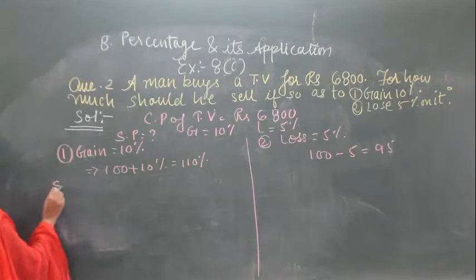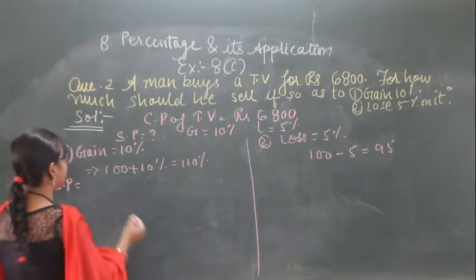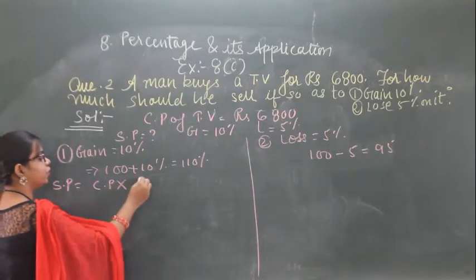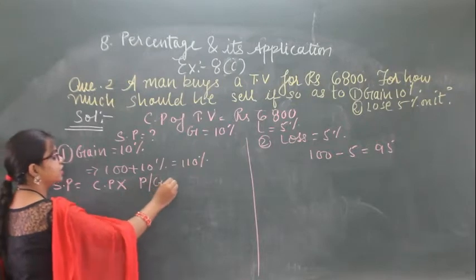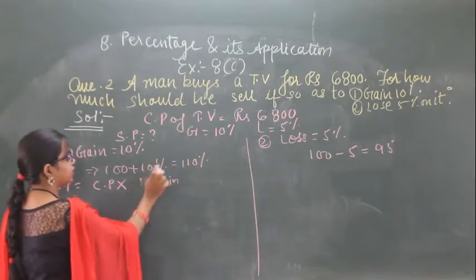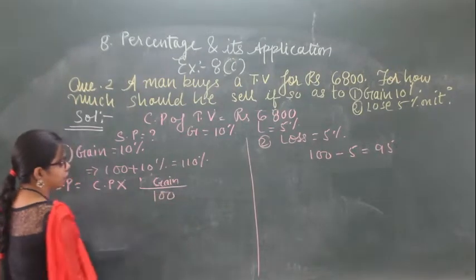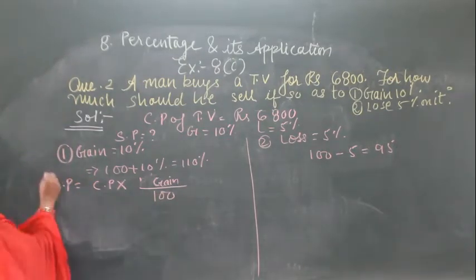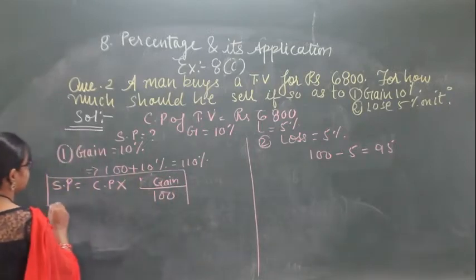You have to find the selling price on both conditions. The formula for selling price is: cost price into gain upon 100. This is the formula for selling price.